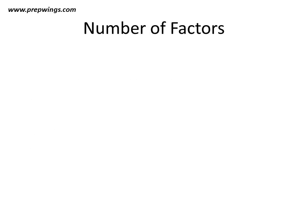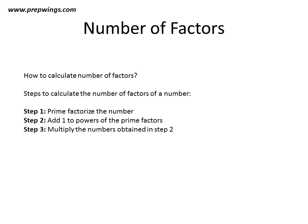Now we'll learn how to calculate the number of factors. We follow three steps. In step 1, we prime factorize the number. In step 2, we add 1 to the powers of the prime factors of the number. And in step 3, we multiply the numbers obtained in step 2.